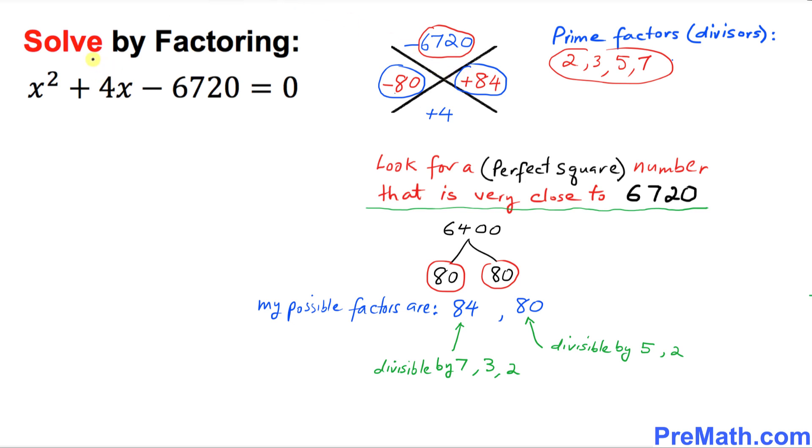Let's focus on this side. Our factors are going to be like this. Put down two parentheses equal to 0. First, put down x and x. In the next step, we're going to put negative 80 in the first parentheses and plus 84 in the second.